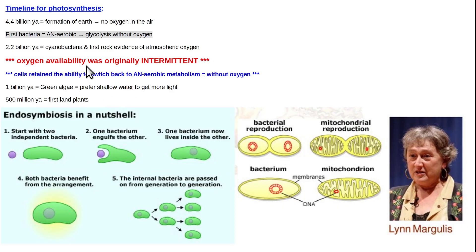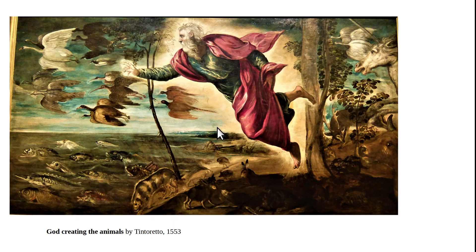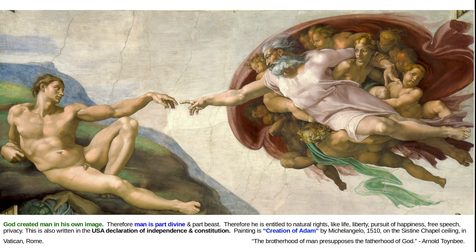Once mitochondria were available, bigger and bigger multicellular organisms could develop. This slide shows Tintoretto's 1553 painting of God creating the animals — he was a Venetian painter, recognizable by his use of color.